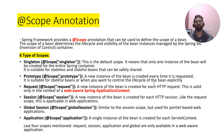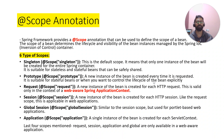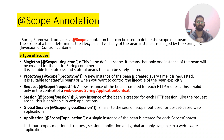The third scope is request scope — a new instance of a bean is created for each HTTP request. This is suitable for stateful beans and is only valid for web-aware Spring applications.